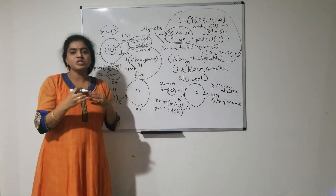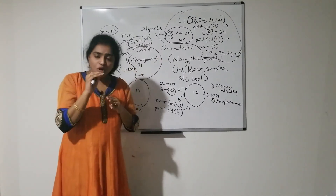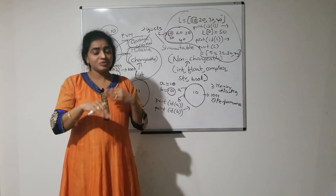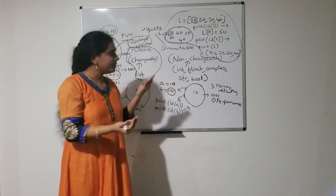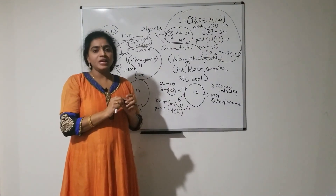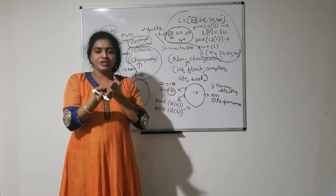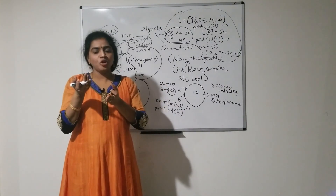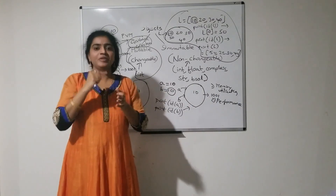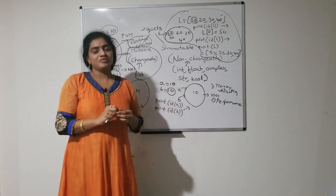If you print the id of the list before and after performing this operation, both will point to the same address — but the values are changed. Instead of 10, 50 will be printed: [50, 20, 30, 40]. Mutable means you can perform changes. Immutable means once an object is created, you cannot perform changes; if you try, a new object is created — that is called immutability.